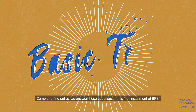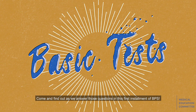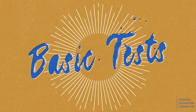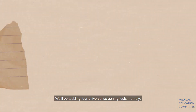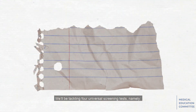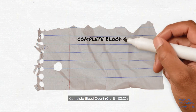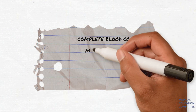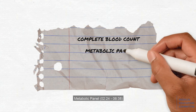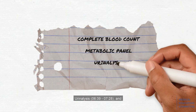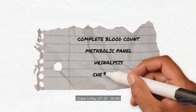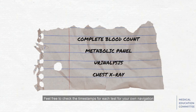Come and find out as we answer those questions in this first installment of BPS. We'll be tackling four universal screening tests, namely complete blood count, the metabolic panel, urinalysis, and the chest x-ray. Feel free to check the timestamps for each test for your own navigation.